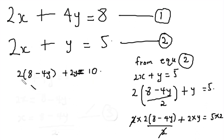2 times 8 is 16. 2 times minus 4y is minus 8y plus 2y, which equals 10. So from here, we have 16 minus 8y plus 2y. Minus 8y plus 2y is minus 6y, which is equal to 10.